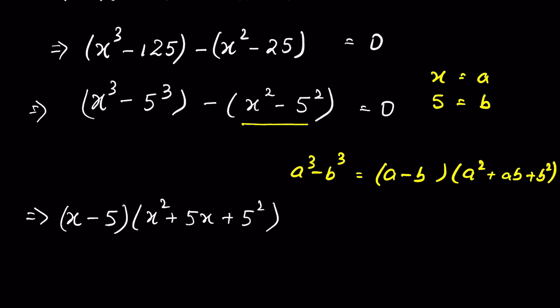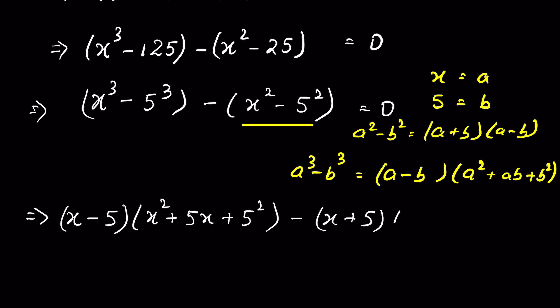The remaining part, x squared minus 25, is in the form of a squared minus b squared. The difference of squares equals a plus b times a minus b. So we can write it as x plus 5 times x minus 5, is equal to 0.